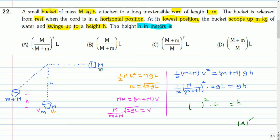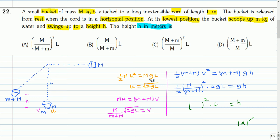Initially the bucket of mass m is kept in a horizontal position, and then at the bottommost point it hits the water and picks up m kg of water. Let the velocity of the bucket before it hits the water be u, and after that the bucket with water, let the velocity be V. We can get the value of u using energy conservation: half m u² equals mg·L. So we get u = √(2gL).